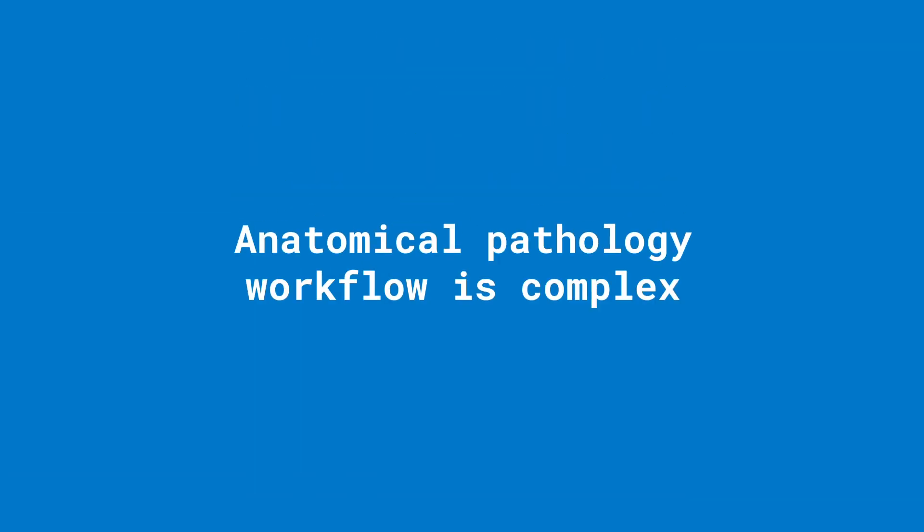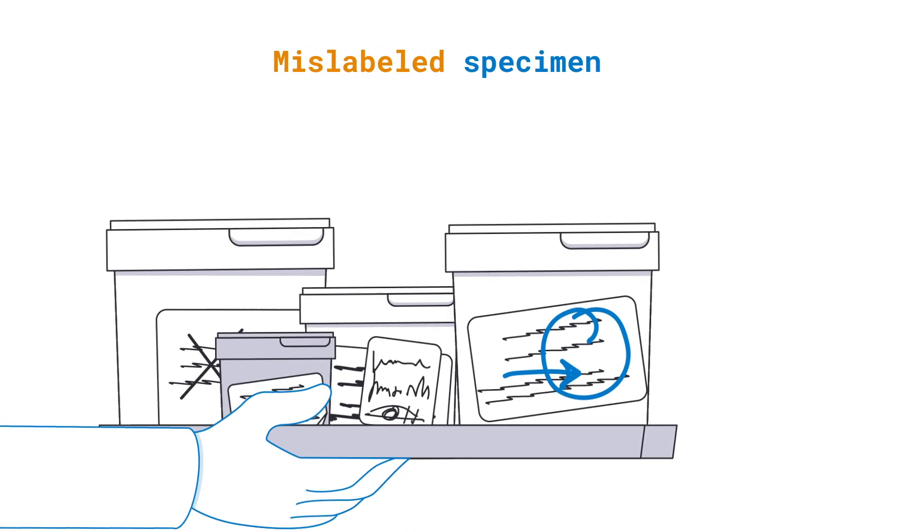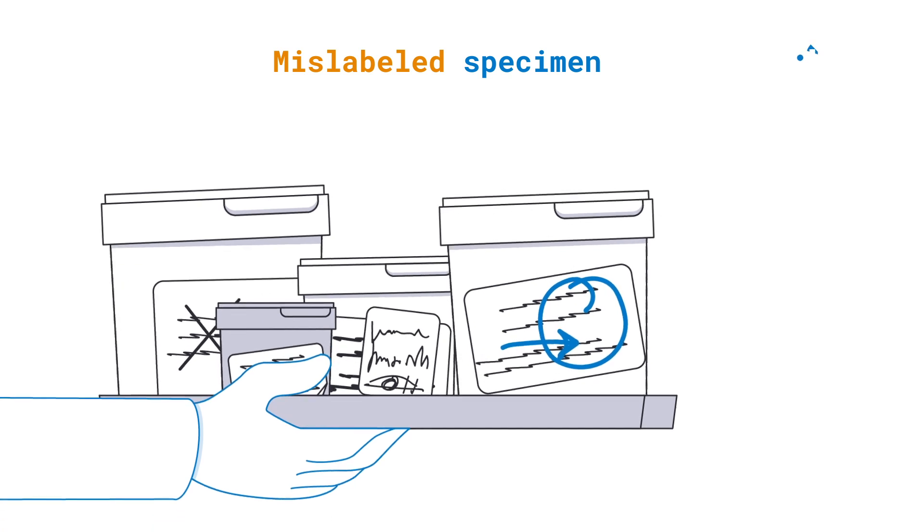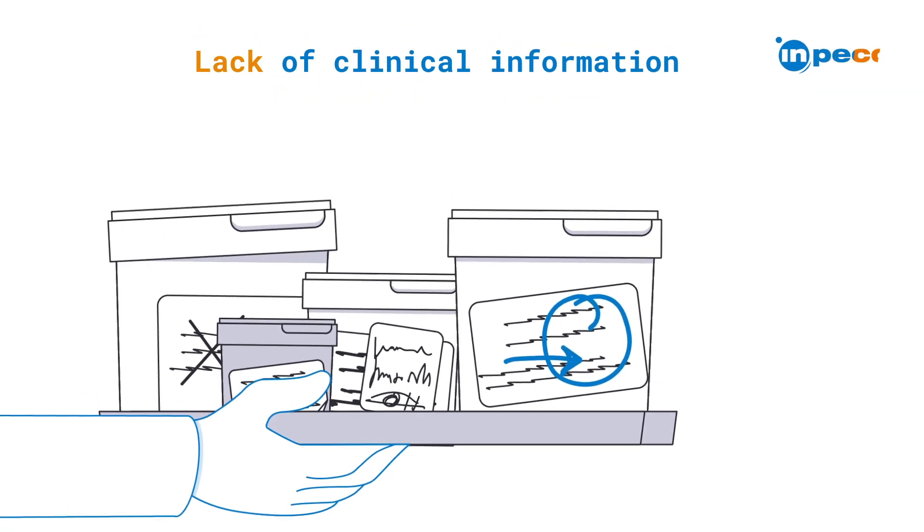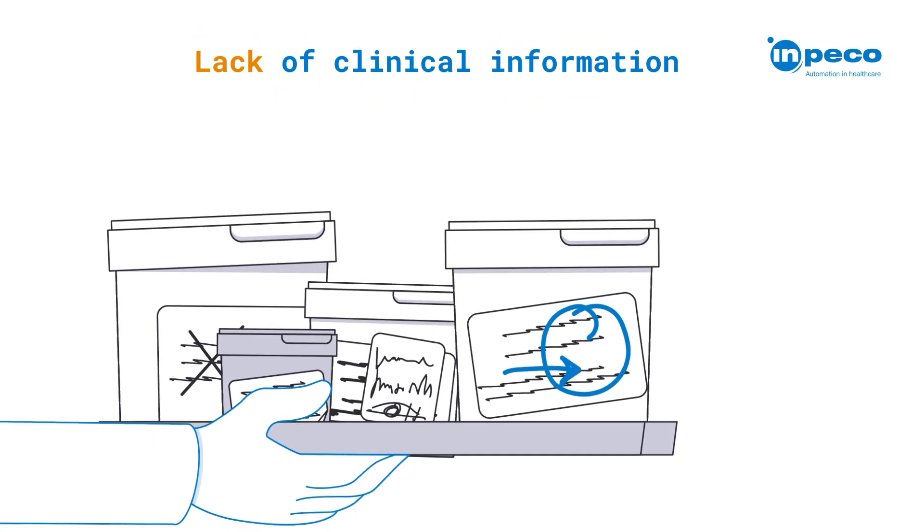In anatomical pathology, the workflow is complex, characterized by multiple critical testing phases, starting with taking various types of samples, sometimes mis-catalogued or mis-labeled.